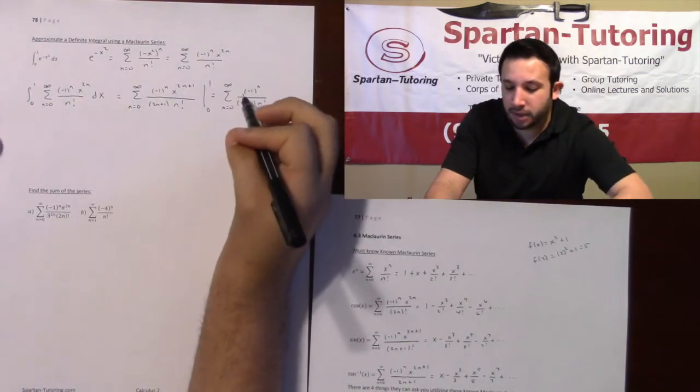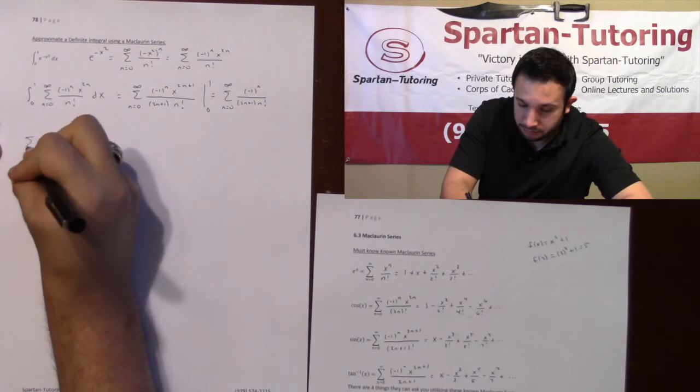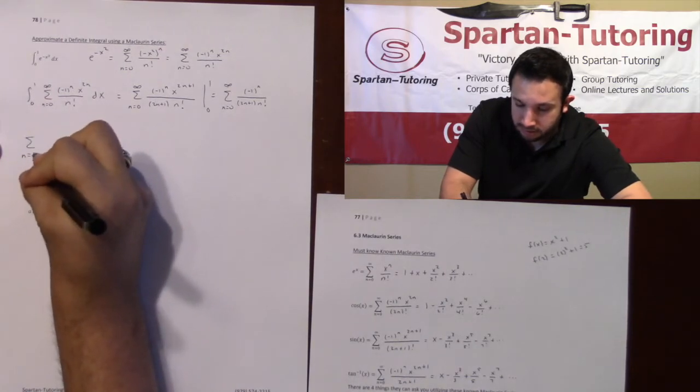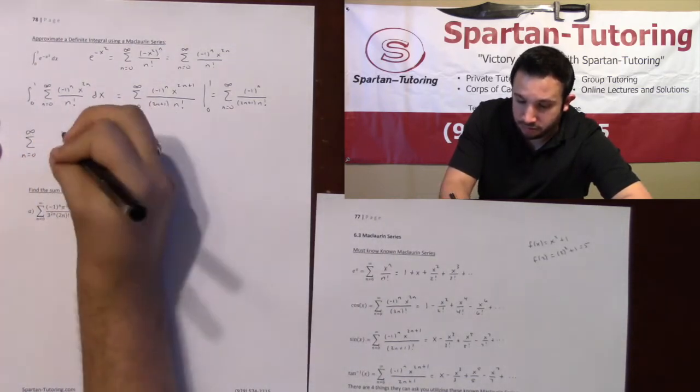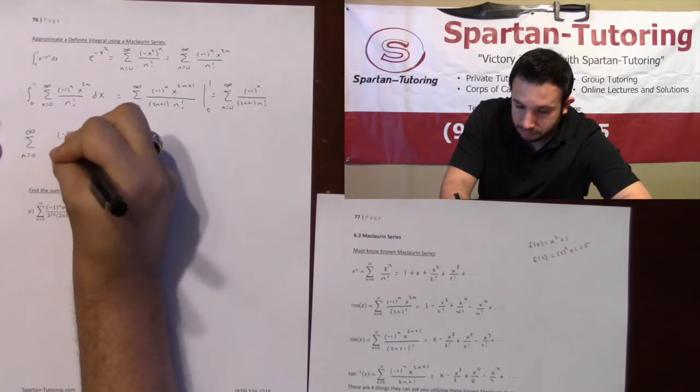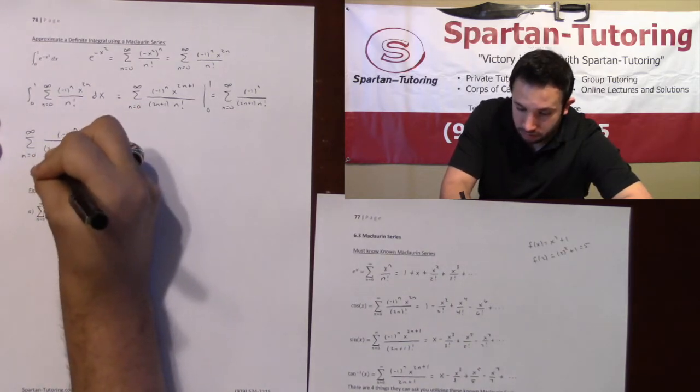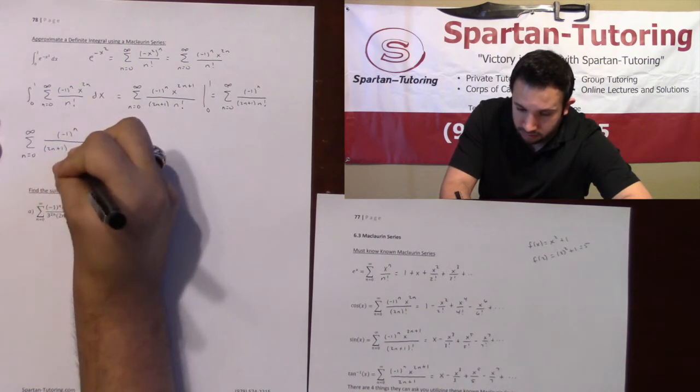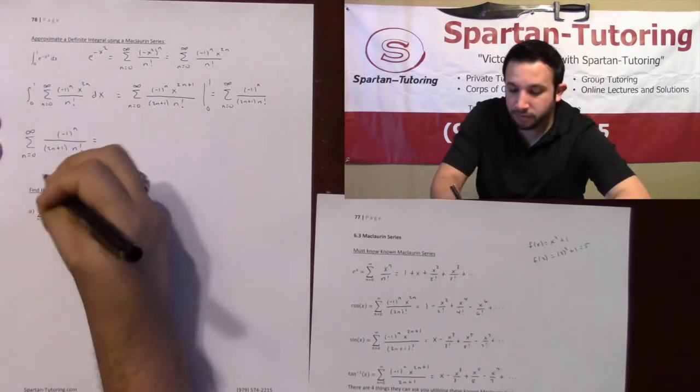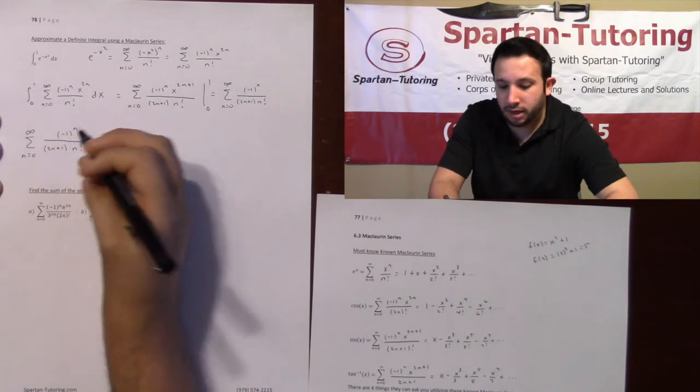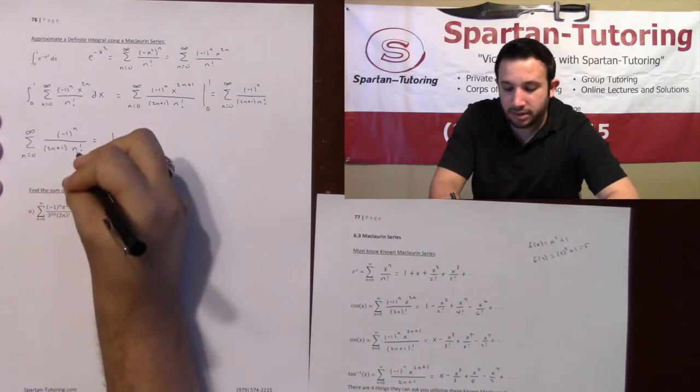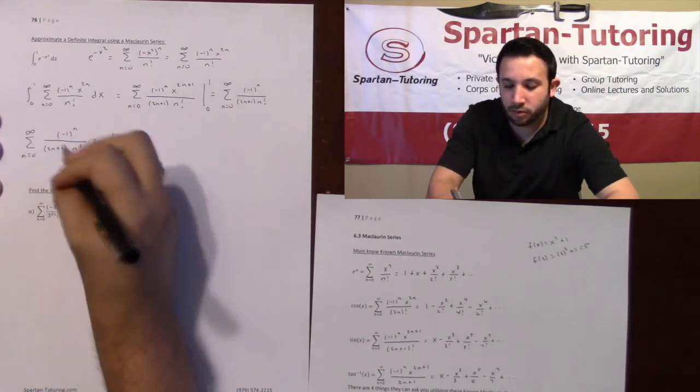What I need to do now is expand this series. Expanding, I'll have the sum zero to infinity, negative one to the n, over two n plus one times n factorial. Plugging zero in there, negative one to the zero is one, zero factorial is one, so it's just one.